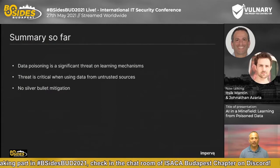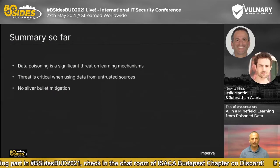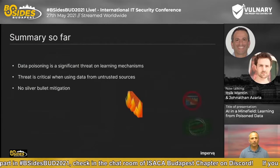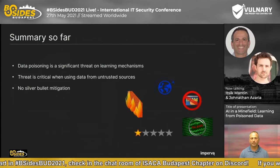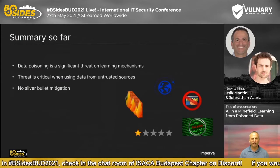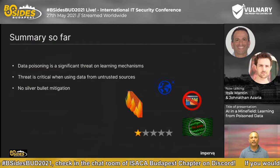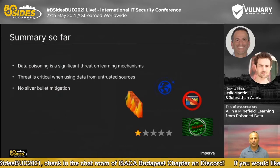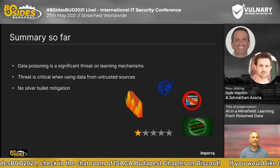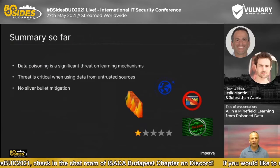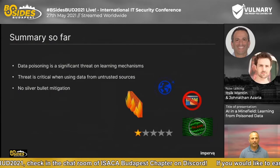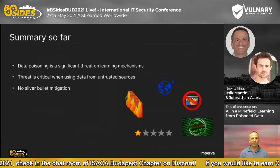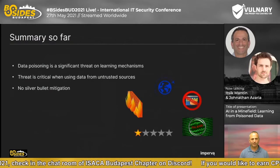So to summarize: data poisoning is a significant threat on learning mechanisms. The threat is critical when using data from untrusted sources. Cybersecurity domains like firewalls, spam, and malware detection that use AI, as well as rating systems like travel and e-commerce platforms, are subject to data poisoning threats. Unfortunately there is no silver bullet — there is a collection of mitigation techniques that when used together can throttle the attacker to a reasonable extent.